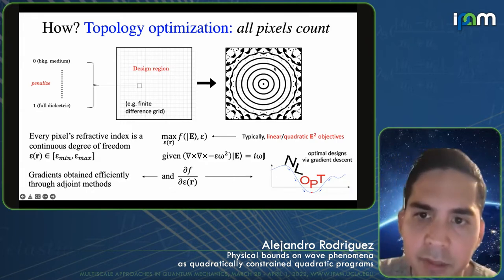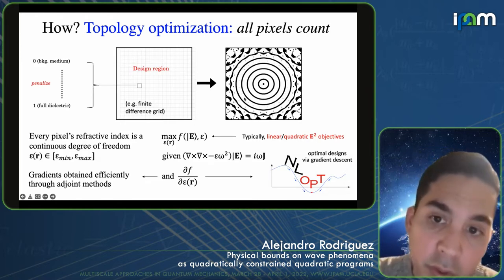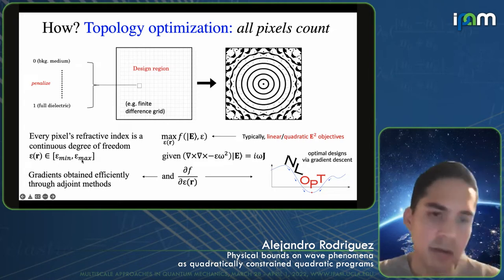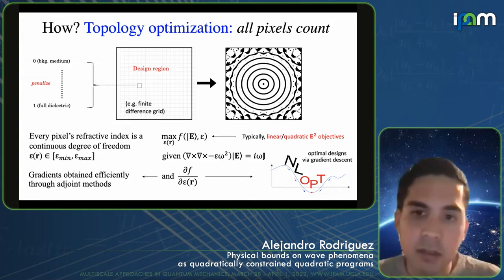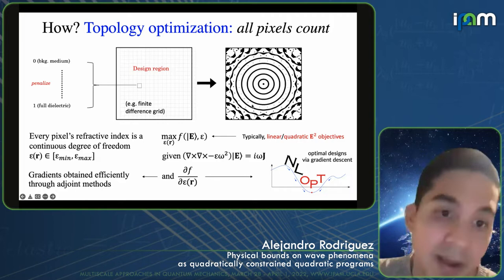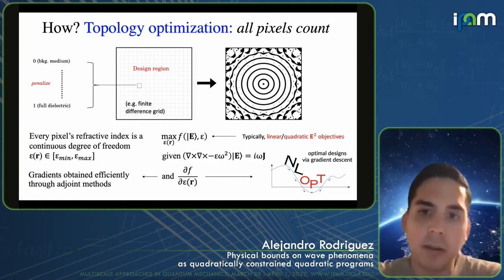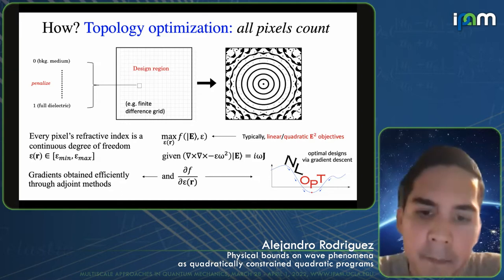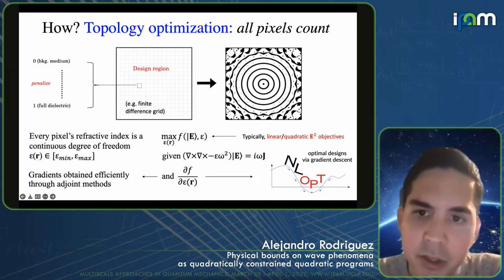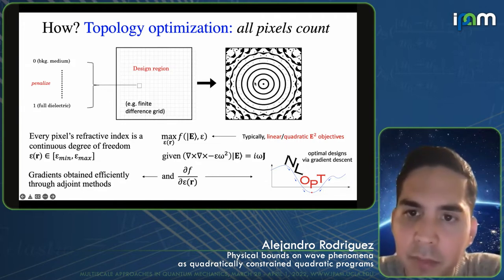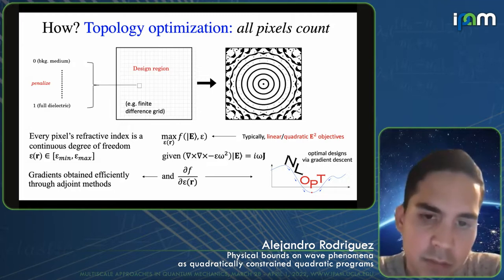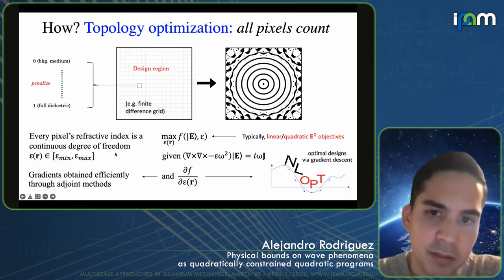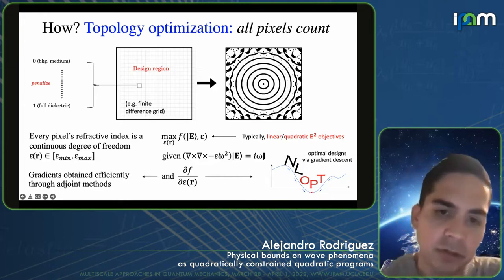Here's an example of the kind of structure you get applying these methods. The structures are binary: black here is the medium and white is the vacuum regions, even though permittivities are taken within some continuous range during optimization. The way to arrive at binary structures like this is to apply regularization or filtering techniques that pin the permittivity to just a specific value once the optimization is nearly finished.